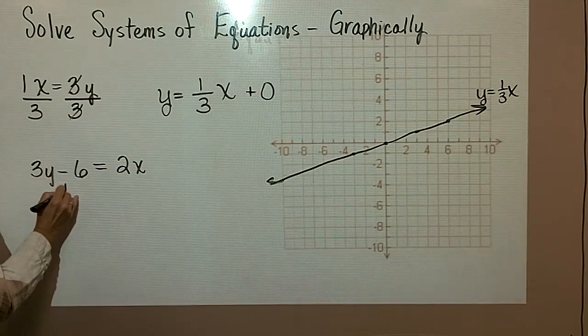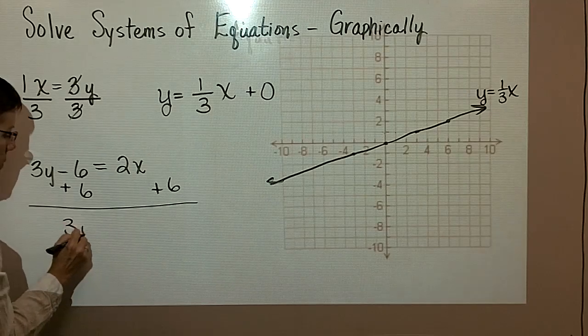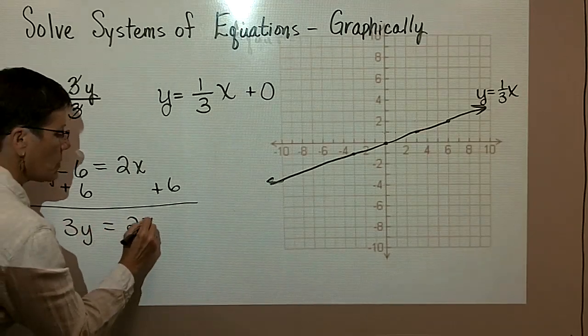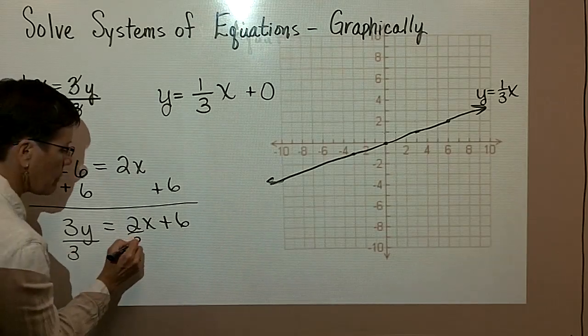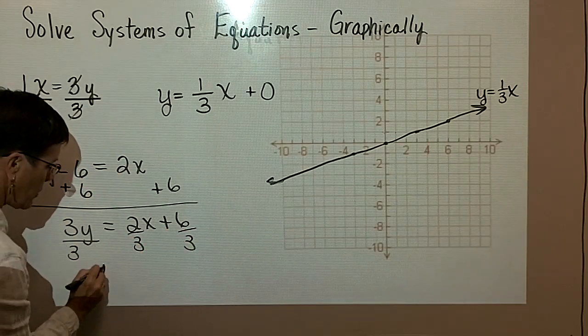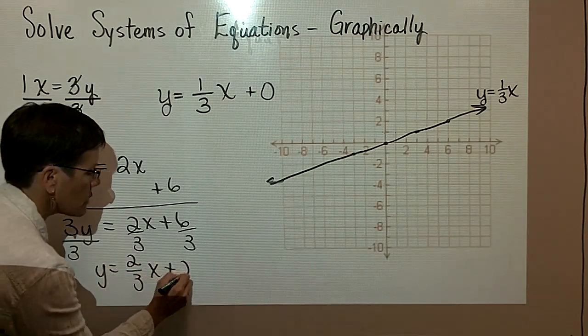I want to get y alone, so I'm going to add 6 to both sides of the equation, and I'll have 3y equals 2x plus 6. And then I'm going to divide both sides by 3, so that I can put this into slope-intercept form. So I have 2 thirds x plus 2.